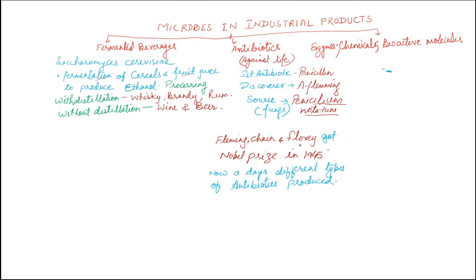In 1945, Fleming, Chain, and Florey received the Nobel Prize. Nowadays, various types of antibiotics are produced with the help of biotechnology and rDNA technology. The production of enzymes, chemicals, and bioactive molecules is also done by these bacteria.